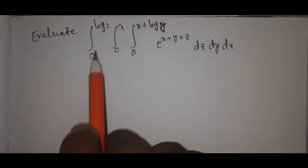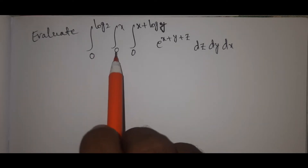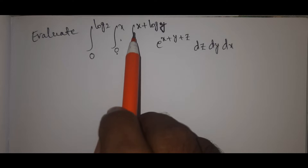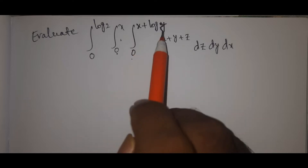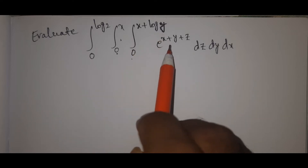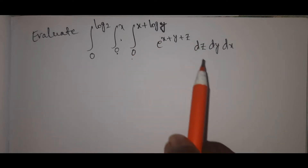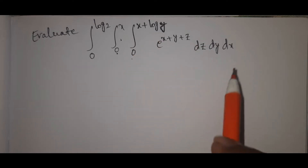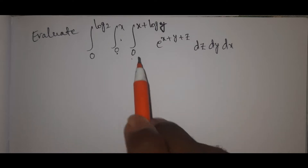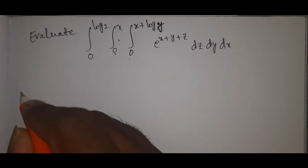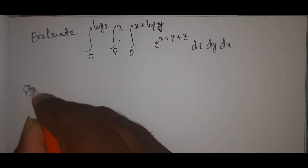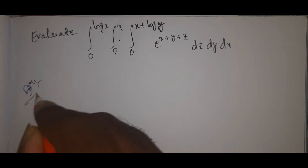Evaluate the integral from 0 to log 2, integral 0 to x, integral 0 to x plus log y, of e to the power x plus y plus z, dz dy dx. These are the limits, read right to left.